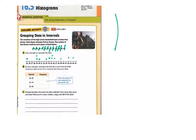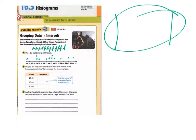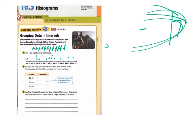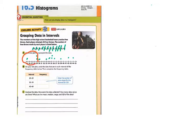Now it says on your dot plot, circle the dots that are in each interval of the frequency table below. An interval means between two numbers — from this number to this number. They want us to circle dots that fall within the interval 20 to 29, so I circle those, then 30 to 39, and then 40 to 49.